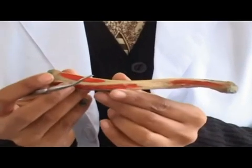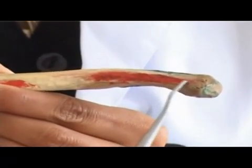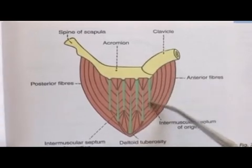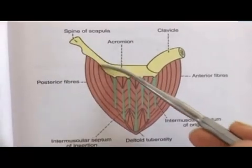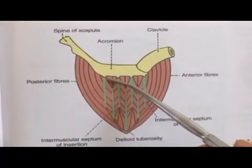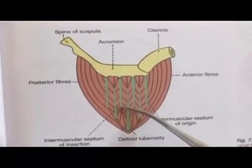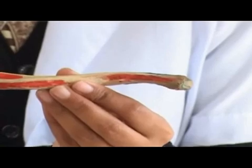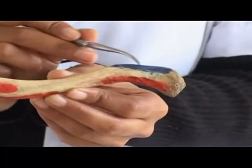The anterior border and part of the upper surface in the lateral one-third gives attachment to the deltoid muscle. Deltoid arises from the lateral one-third of the clavicle, from the acromion, and from the spine of scapula. The fibers arising from the acromion are strong and multipennate in nature. The whole muscle is inserted into the deltoid tuberosity of humerus. The posterior border of the lateral one-third of the clavicle provides distal attachment to trapezius, the shrugging muscle.